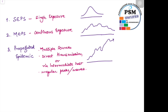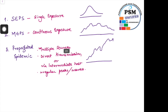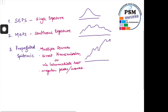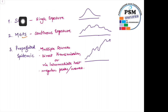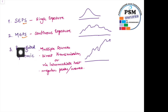Epidemic curves could either be a single source, also called a point source. The point source could be a single exposure (SEPS) or multiple exposures (MEPS). Alternatively, we can have a propagated epidemic.